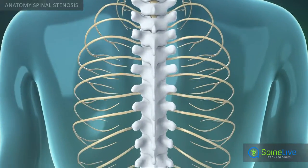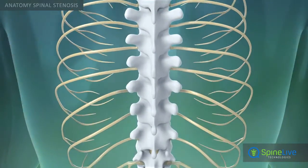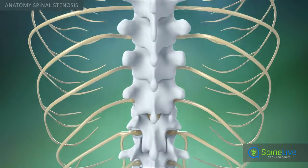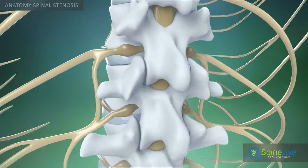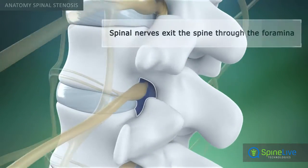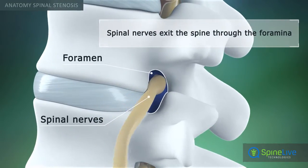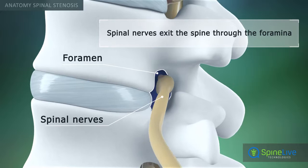The spinal nerves branch off your spinal cord in pairs and travel through small openings between your vertebrae, called intervertebral foramina.